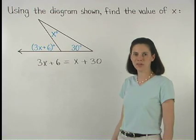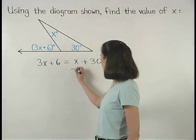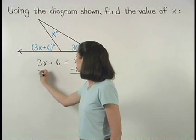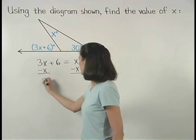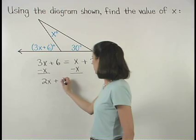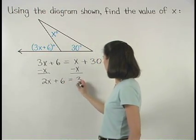And solving the equation from here, we subtract x from both sides to get 2x plus 6 equals 30.